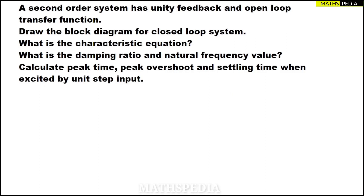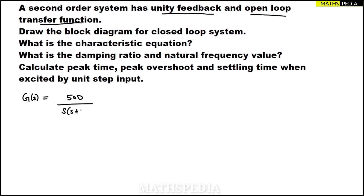In this video we'll be solving one problem based on a second order system, transfer function based. Let us understand the problem first. The second order system has unity feedback and open loop transfer function G(s) equal to 500 divided by s times (s plus 15). This is the open loop transfer function they have given with unity feedback.